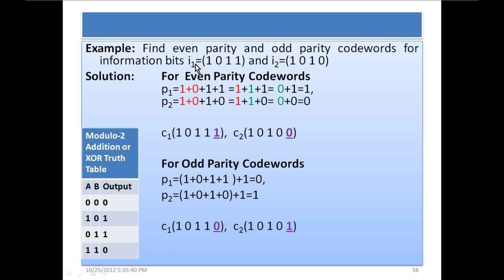For i1 = 1011, we add the bits using modulo 2 addition. In modulo 2 addition: if both input bits are the same, the output is 0 (00→0, 11→0); if they differ, the output is 1 (10→1, 01→1). Adding 1 ⊕ 0 = 1, then 1 ⊕ 1 = 0, then 0 ⊕ 1 = 1. Alternatively, by counting the number of 1s in 1011: there are three 1s (odd), so for even parity p = 1.